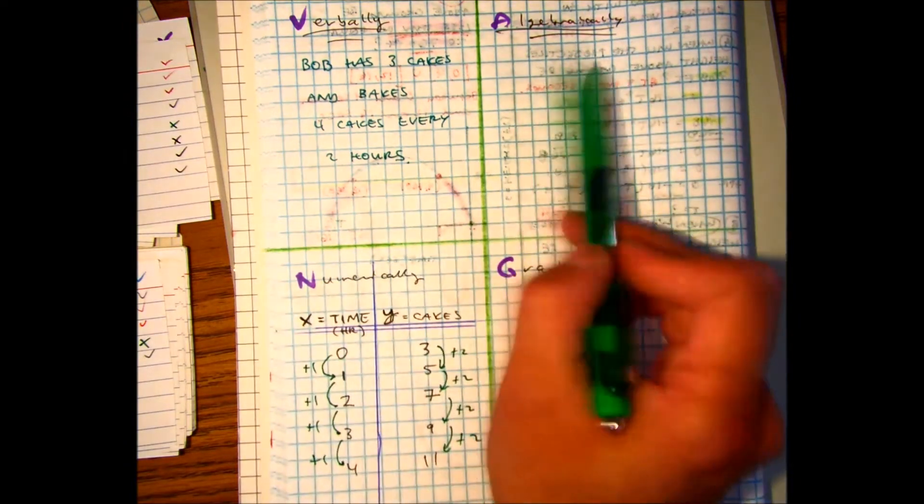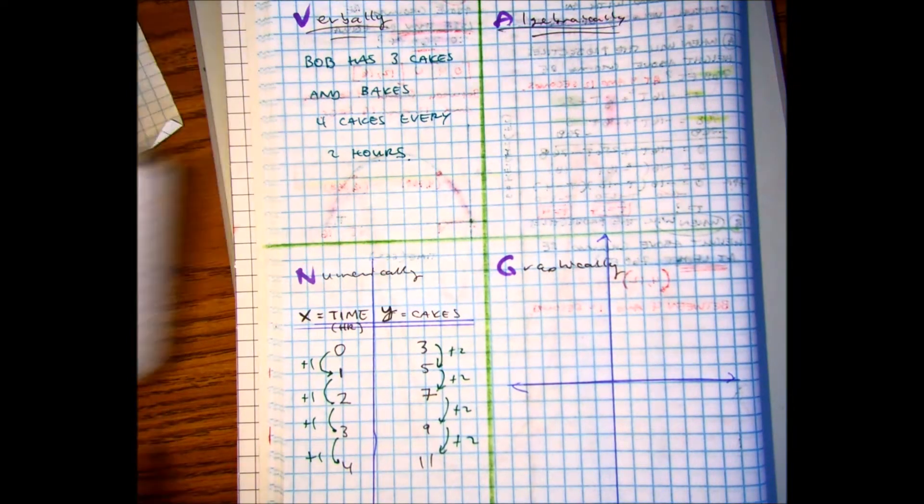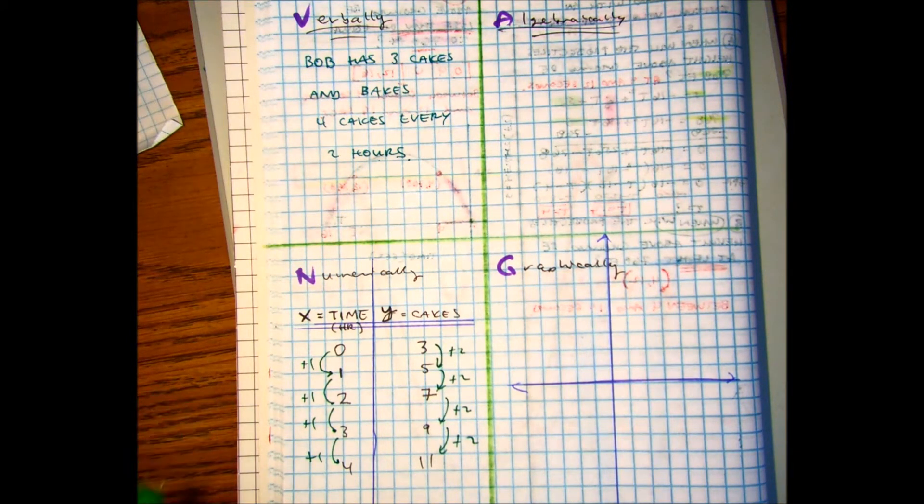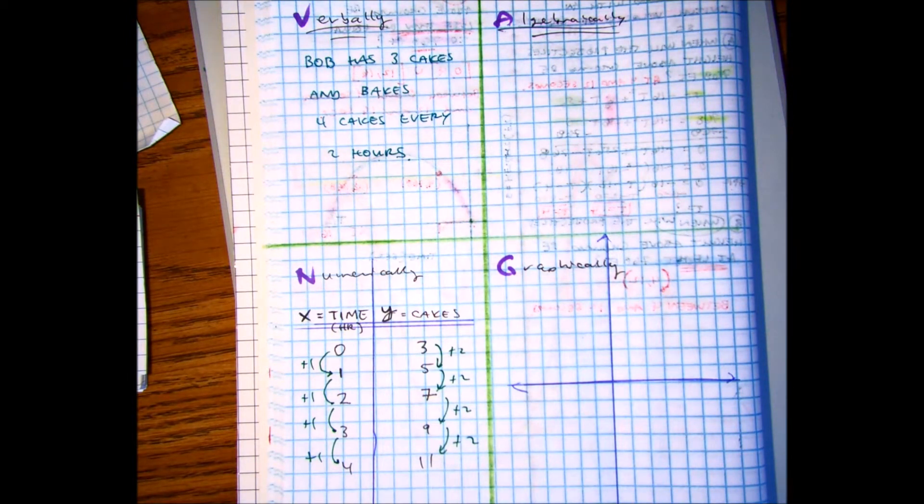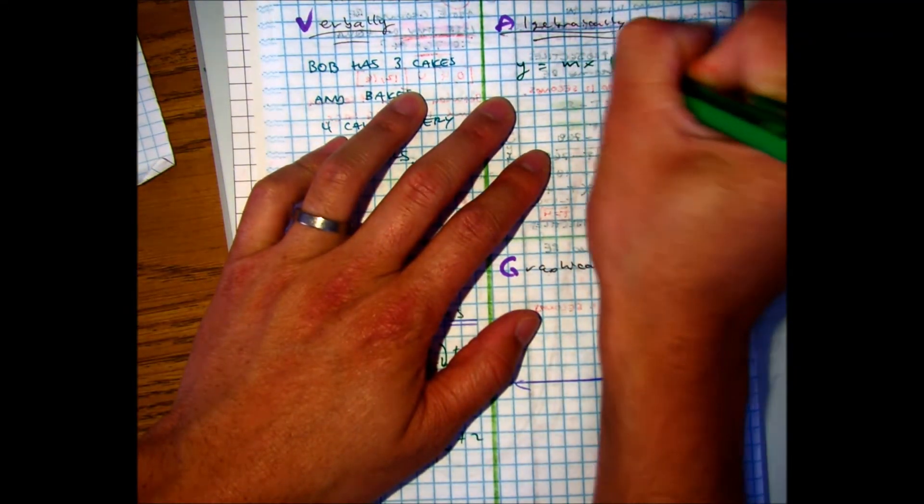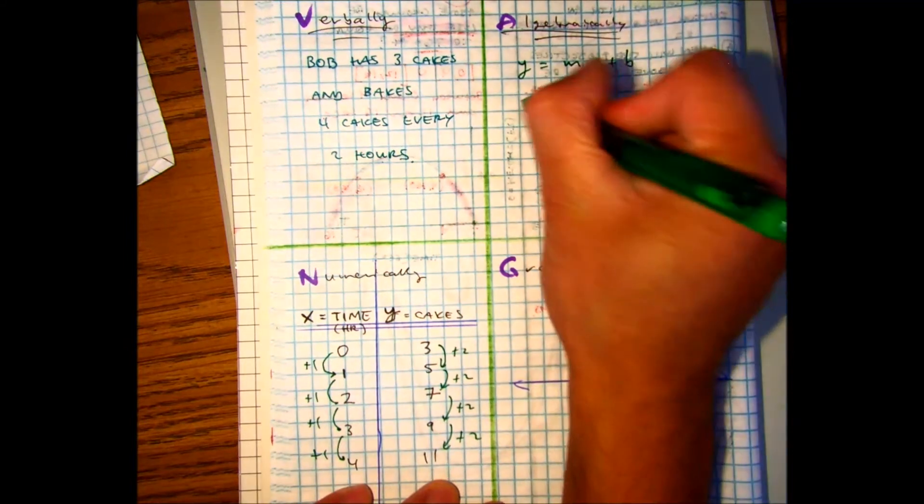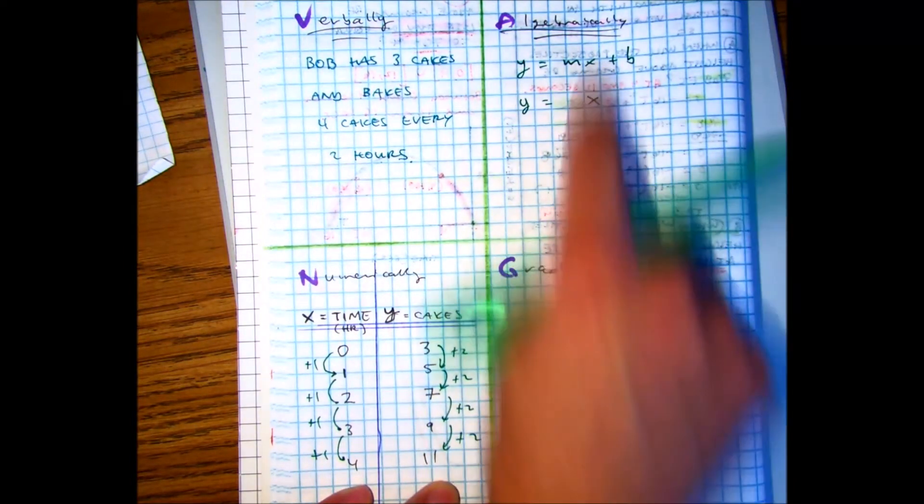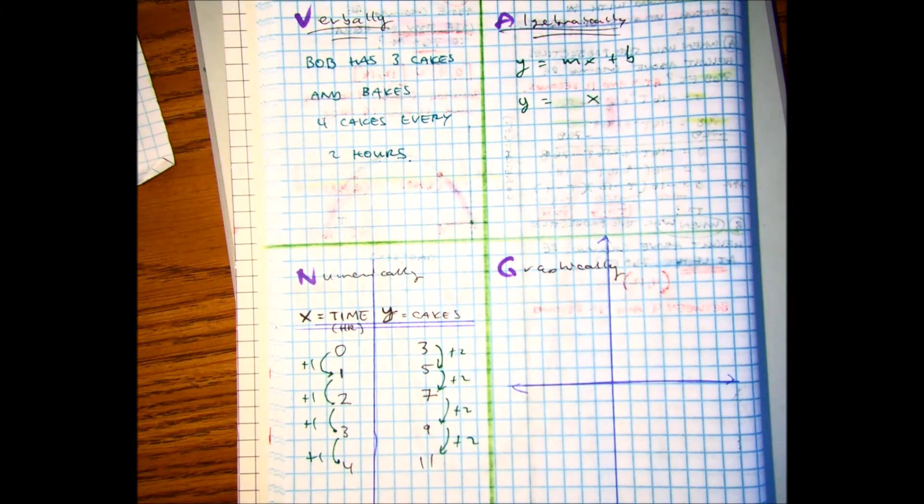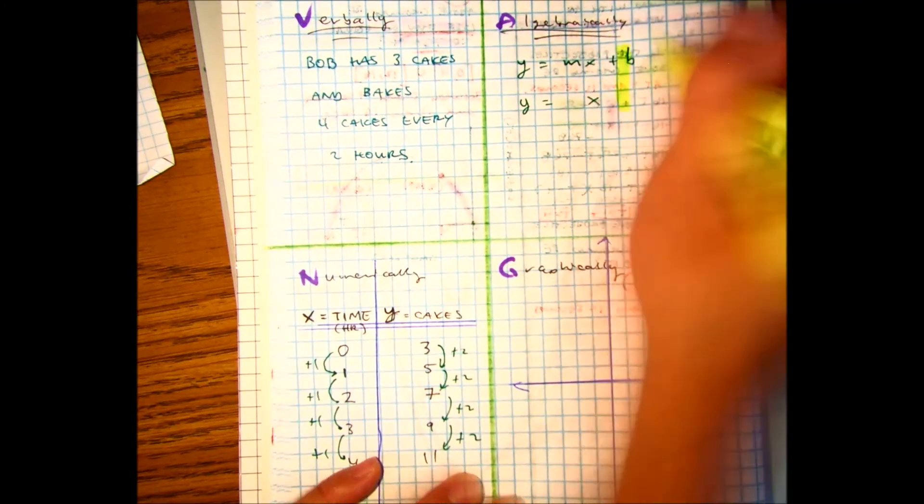Partner B tell partner A. What's slope intercept form? What's slope intercept form? Ivan A. Well, the Y's and the X's are going to stay the same. Class, what's our starting point? Bob started with zero? Three. Bob has.